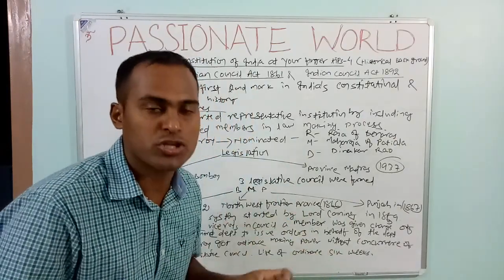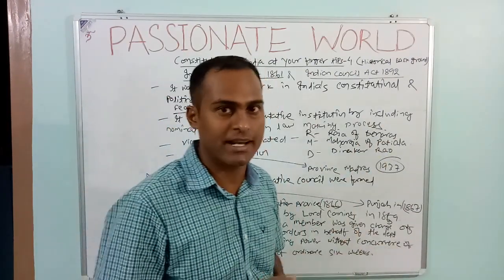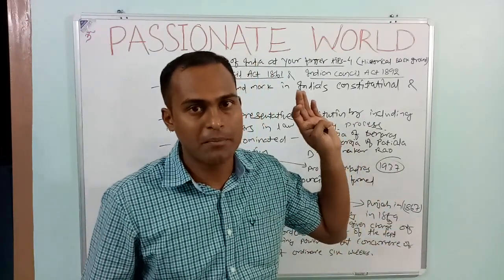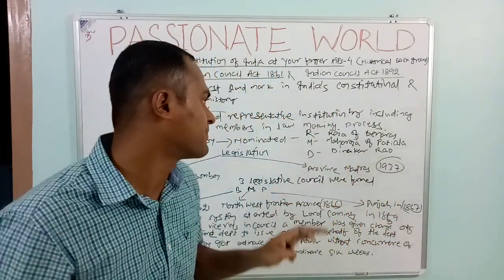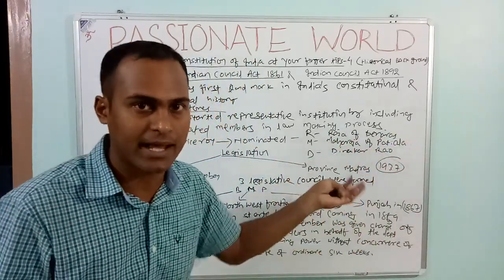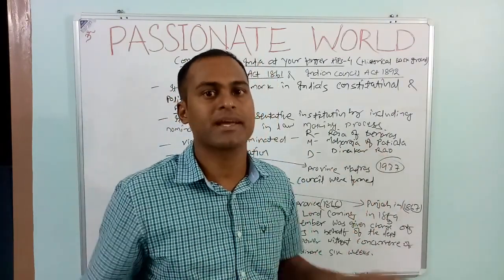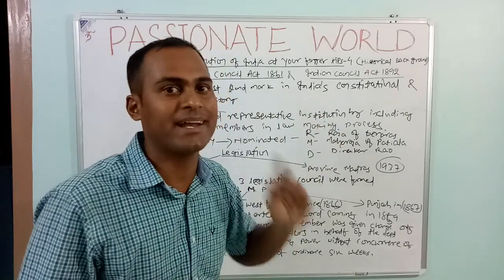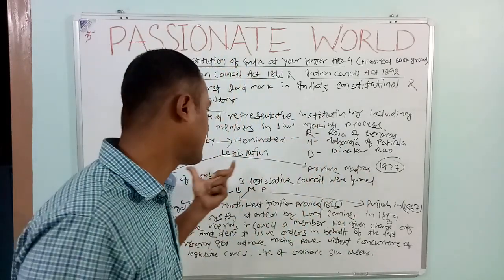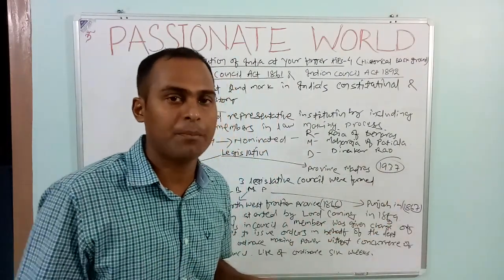Let's have a quick recap of the Indian Council Act 1861. It was the first step toward representative institutions by including Indians as nominated members to the Governor General in Council. The first persons nominated were, remember using RMD: Raja of Banaras, Maharaja of Patiala, and Dinakar Rao. The legislative process, which had been centralized, started becoming decentralized starting from the Indian Council Act 1861, which gave separate powers to the Bombay and Madras Presidencies.